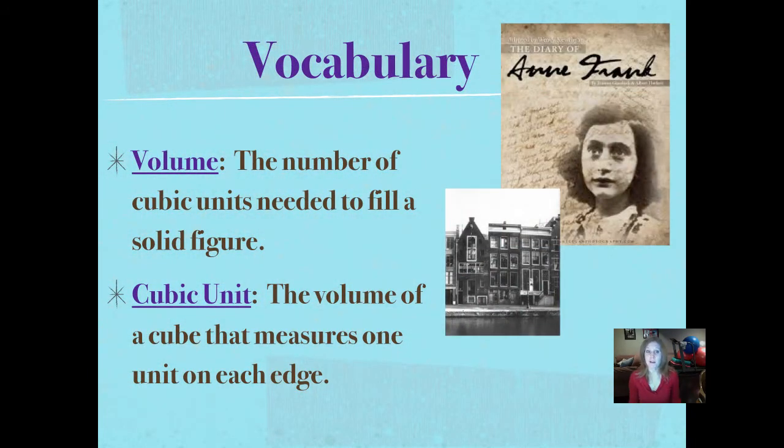Here's our vocabulary. We're talking about volume. That's the number of cubic units, that three-dimensional shape, needed to fill a solid figure. Think of a box. How many of those cubic units would it take to fill up a box? A cubic unit is the volume of a cube that measures one unit on each edge. Sometimes we know that they're cubic centimeters, sometimes cubic feet or cubic meters or cubic inches. But if we don't have a unit of measurement that's specific, we would say it's a cubic unit. There's the diary of Anne Frank. That's the diary that she actually kept. And that's the building that they went into hiding in. They had a little secret annex, this little secret hiding place that they had back behind a hidden bookcase.